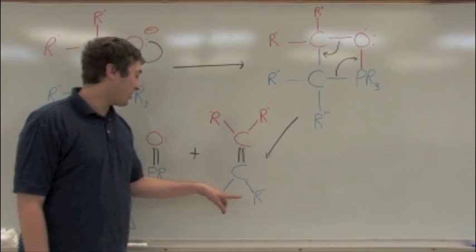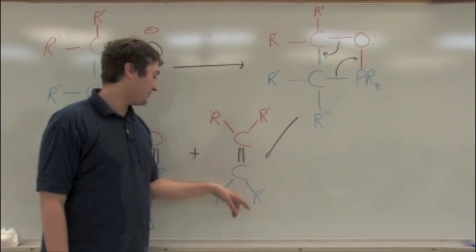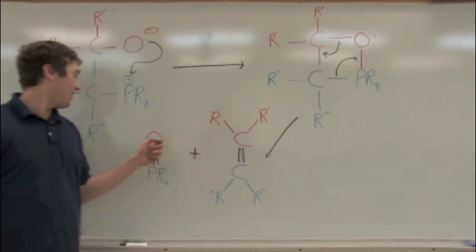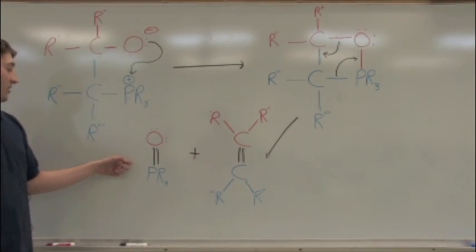E and Z isomers simply means that the R groups can be oriented in any direction around the double bond. And you also have here your phosphine oxide byproduct.